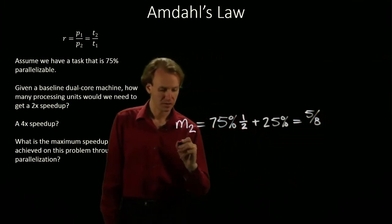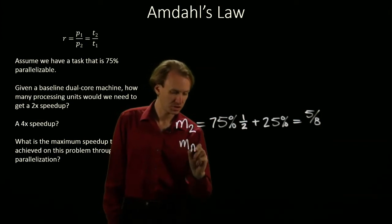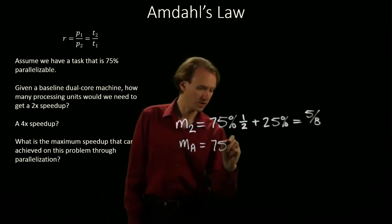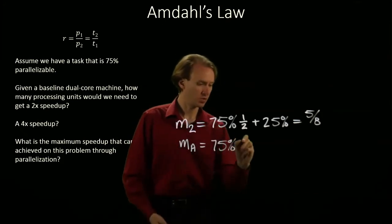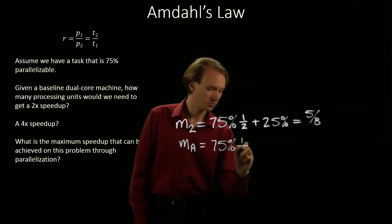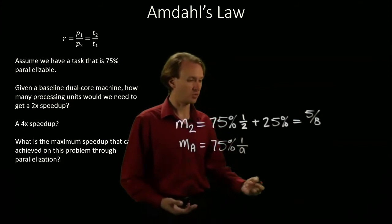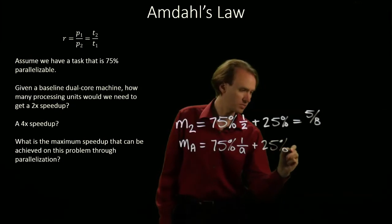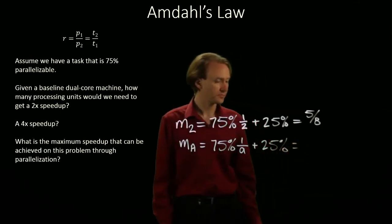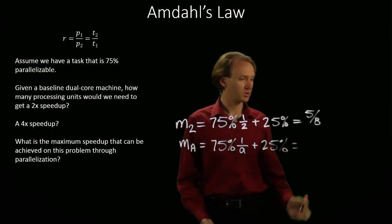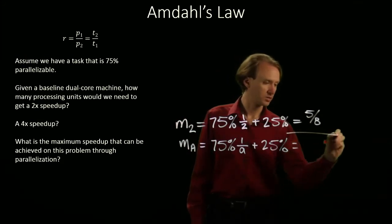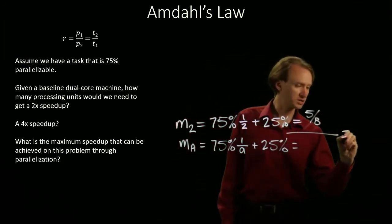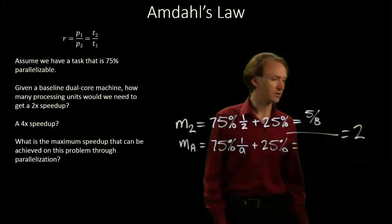So, I'll have some machine A where 75% of the code is parallelizable, and it's going to be running on, say, A number of processors, and 25% is non-parallelizable, and I'll get some number, and when I take 5 eighths and divide it by this, I should expect to get 2 out as a result.